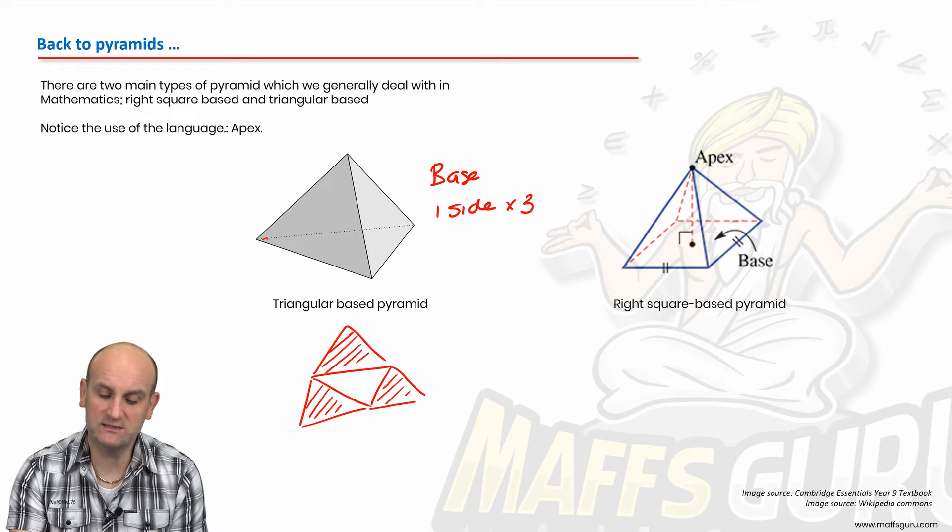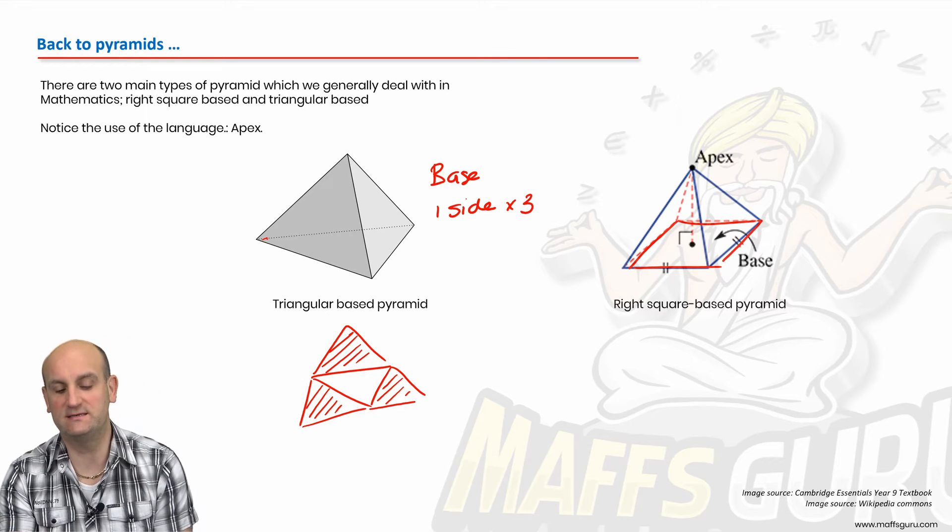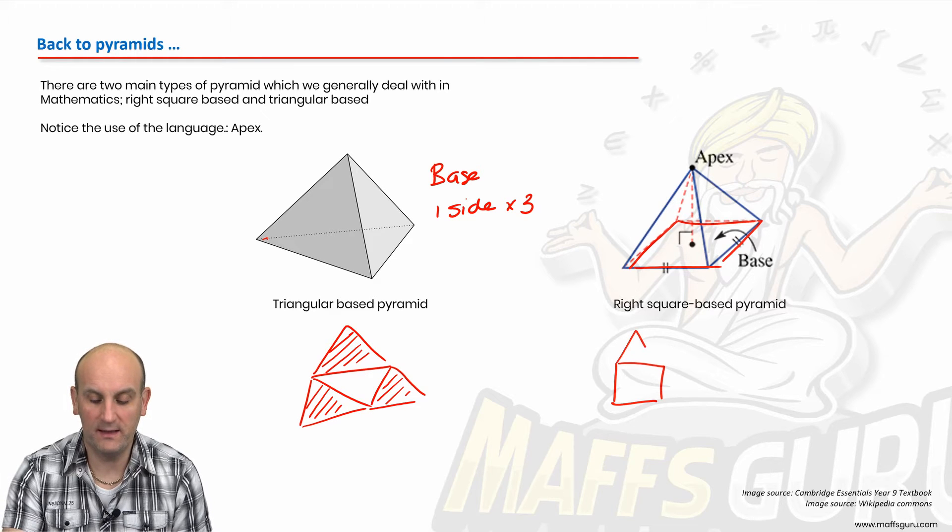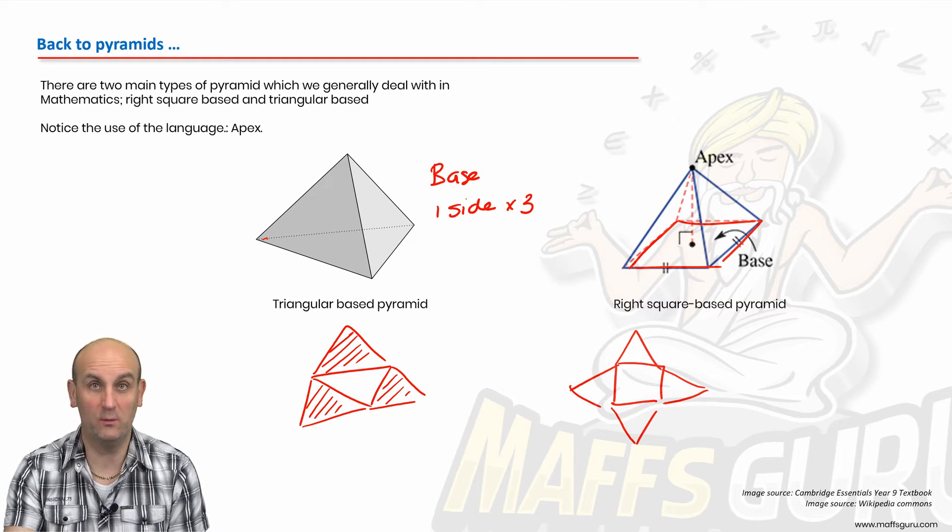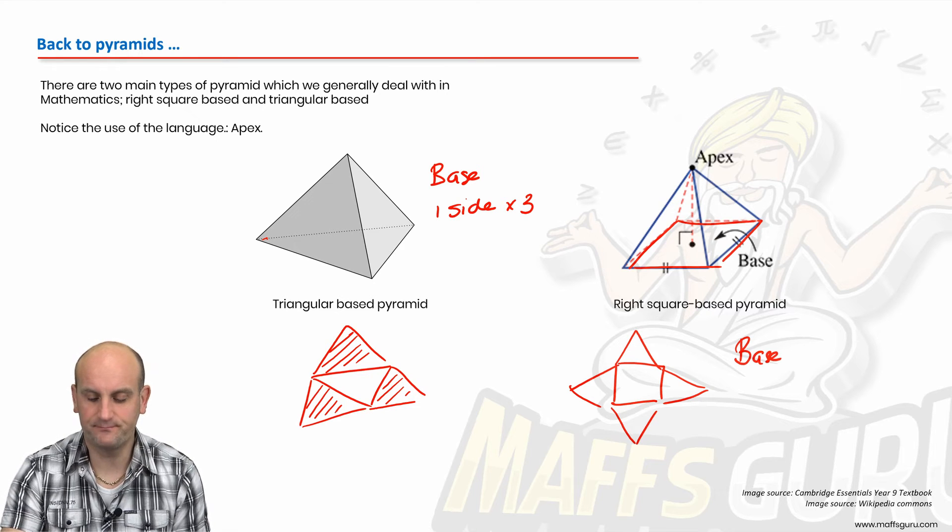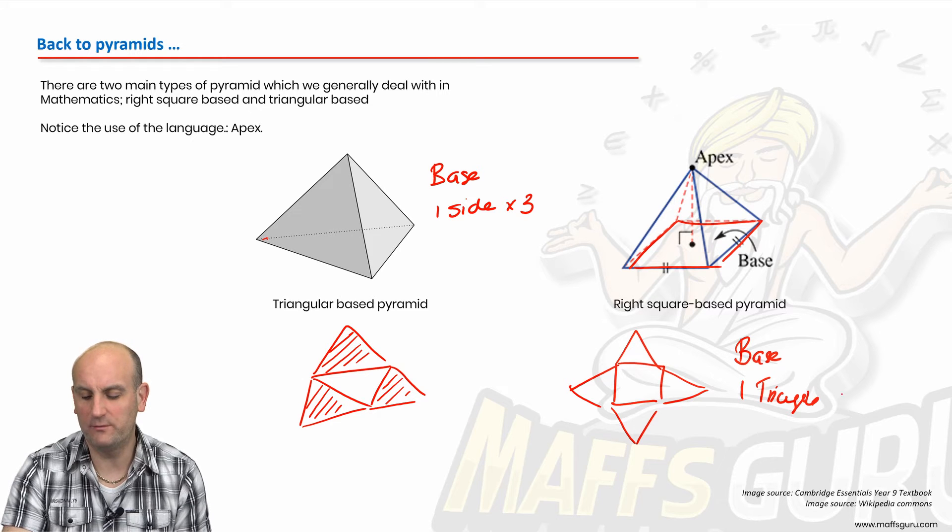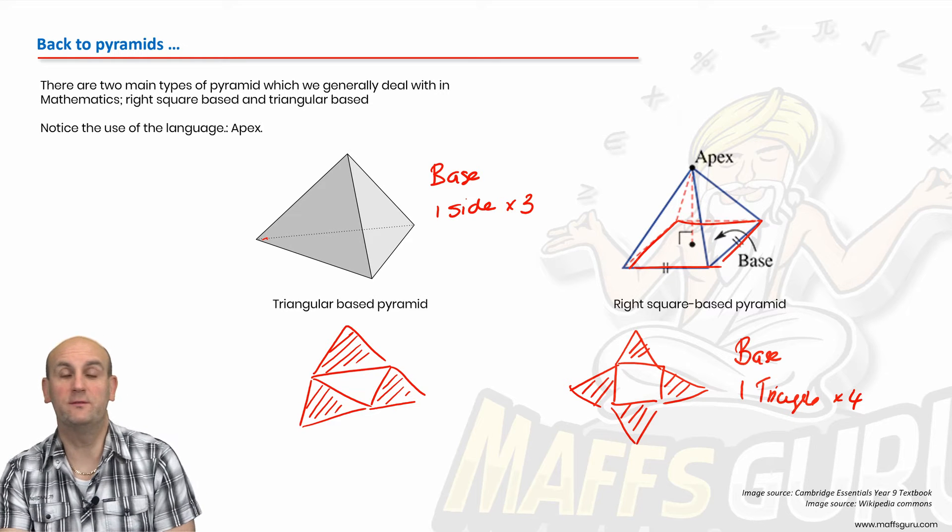This is called a right square base pyramid because there is a square base. Again, if I was going to draw a net of this, there would be my base, there would be a triangle, a triangle, a triangle, and a triangle. And once again, we could find the base, find the area of one of the triangles, and then multiply that by four because generally speaking, all those triangles are going to be the same.